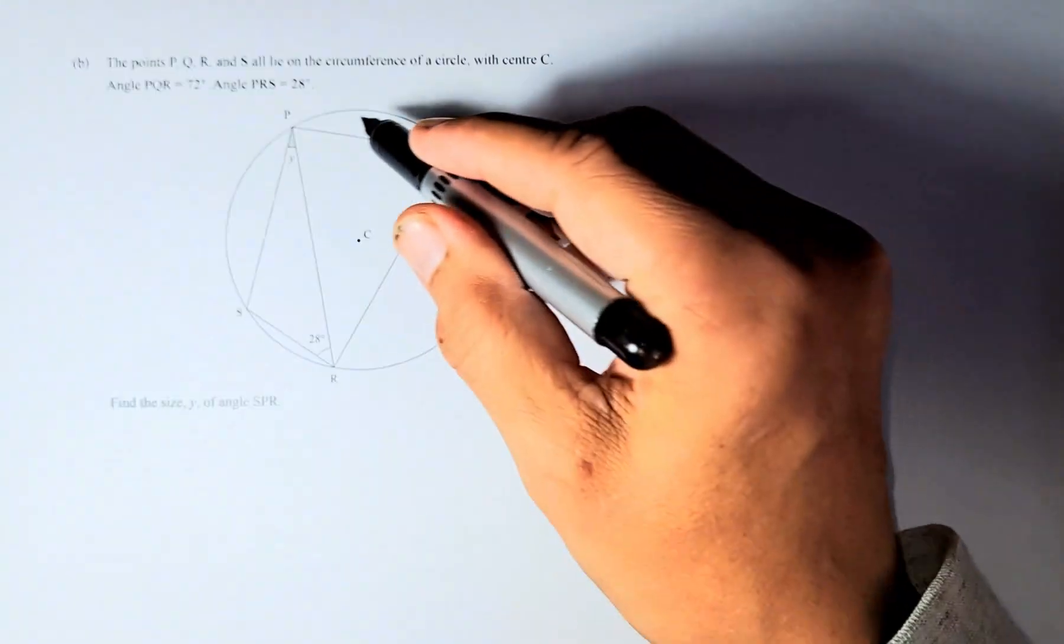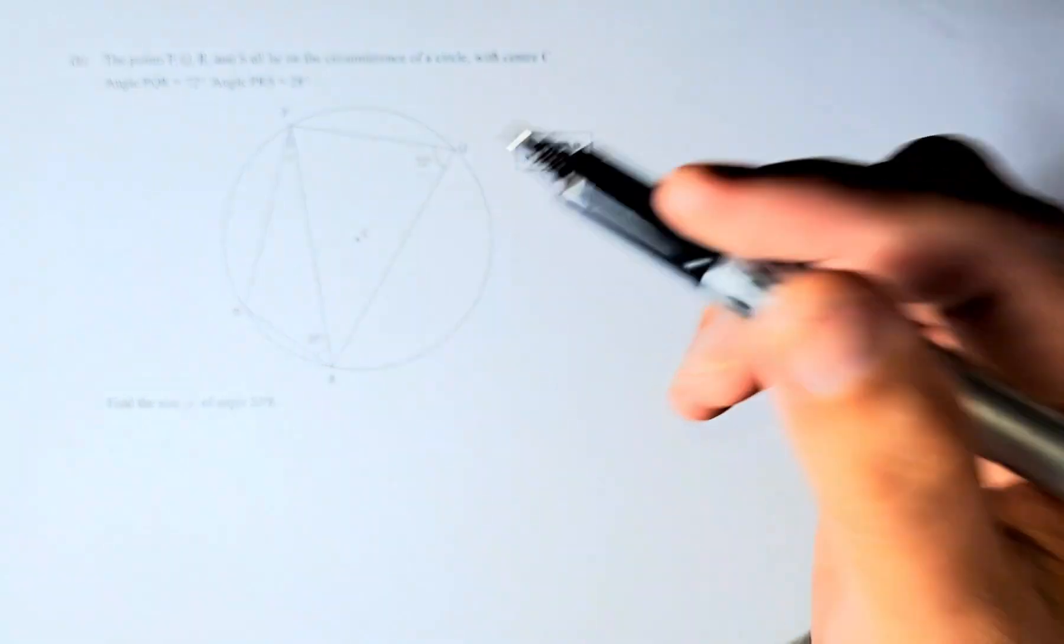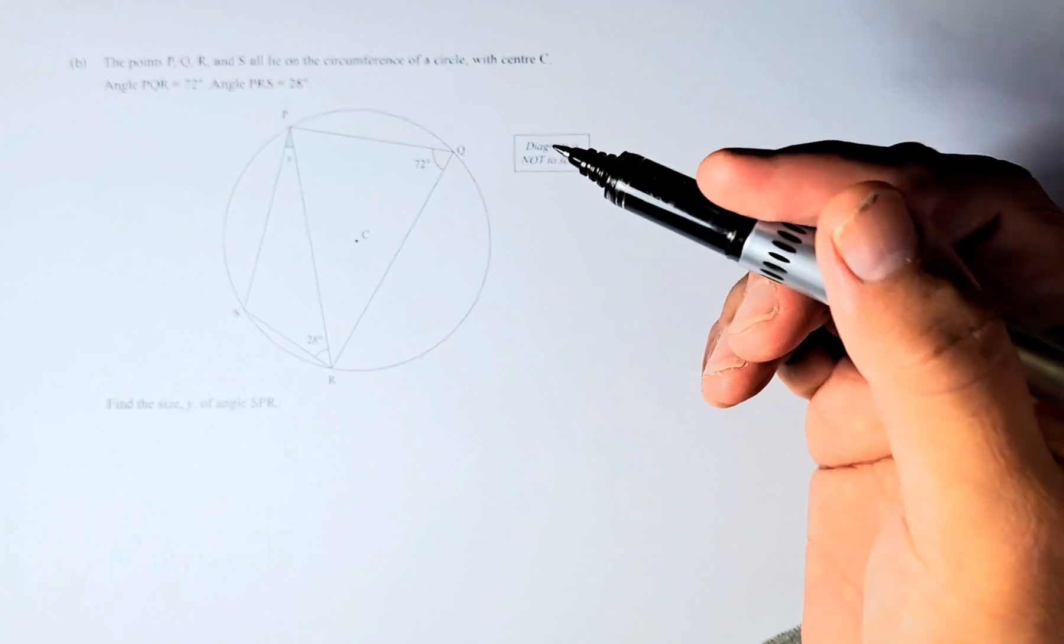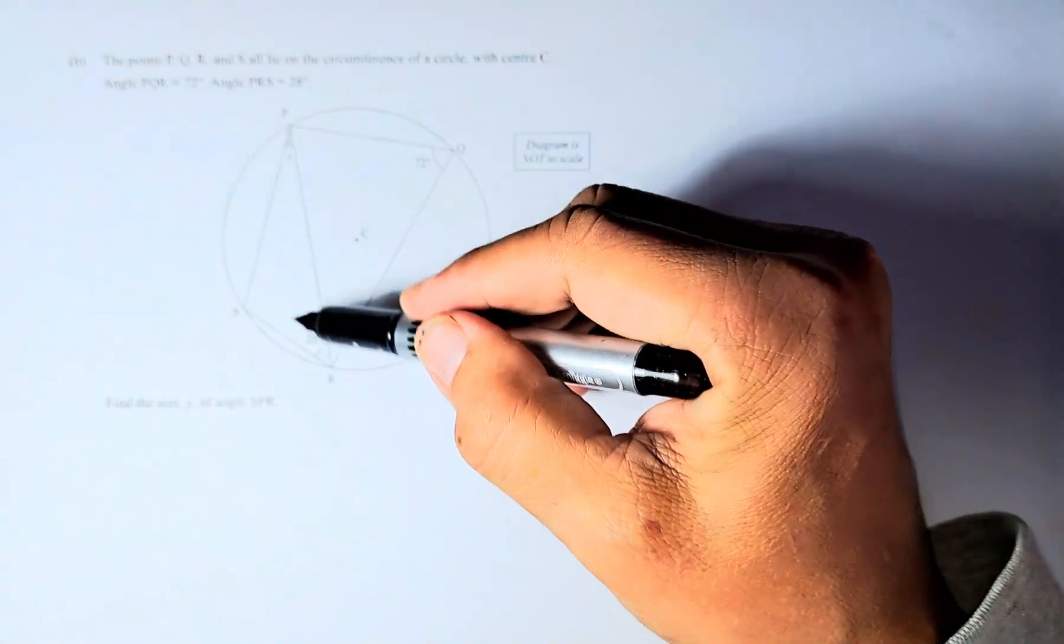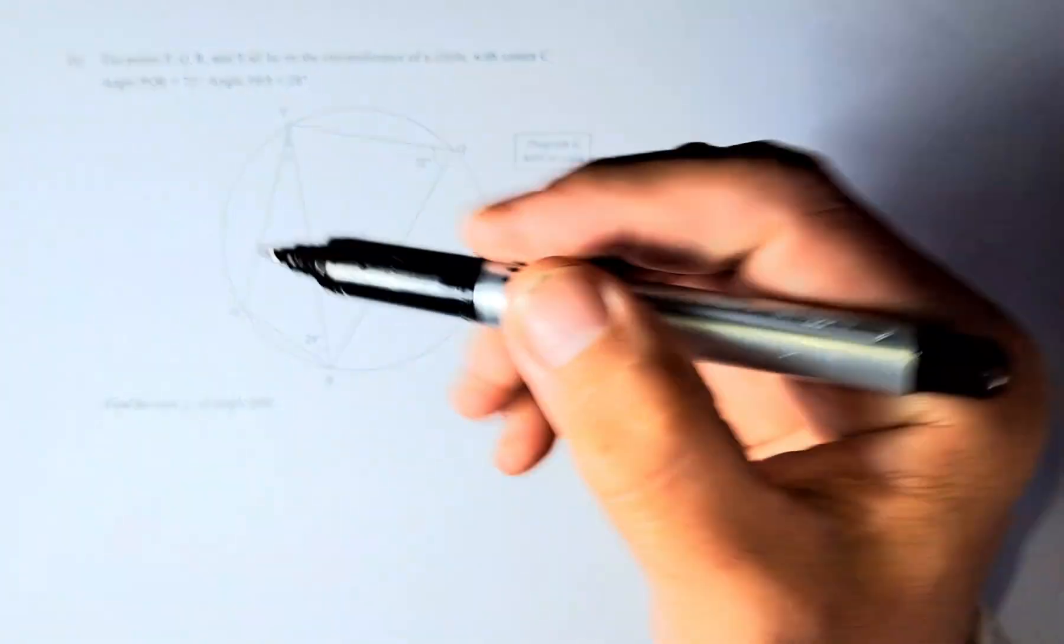This is a quadrilateral inside a circle, called a cyclic quadrilateral. There are two theorems regarding cyclic quadrilaterals. The first and most useful one is that opposite angles add up to 180 degrees. This angle and that angle add up to 180, so do this angle and that angle. So let's find that angle and label it as angle X.